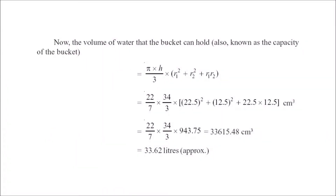One more thing being asked is the volume of water the bucket can hold. We do not consider the lower cylindrical part separately — we directly use Volume = (π/3) h (r1² + r2² + r1 r2) for the frustum portion. This gives 36.62 liters.